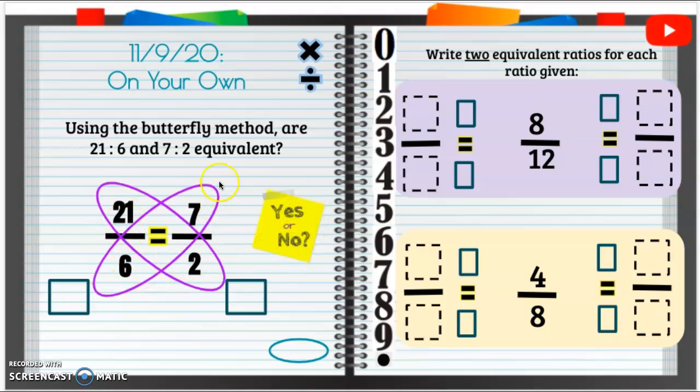All right, so we have our butterfly method here. We have 21 to 6 and 7 to 2, or 21 divided by 6 and 7 divided by 2. So we're going to use our butterfly method here.